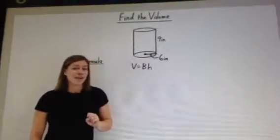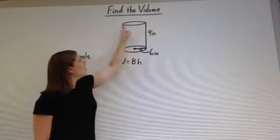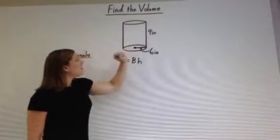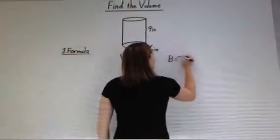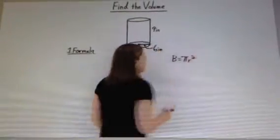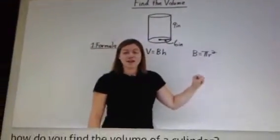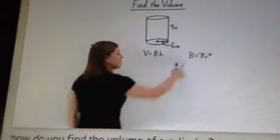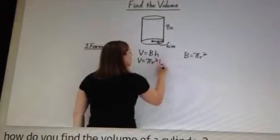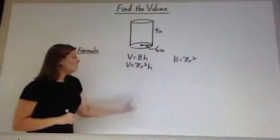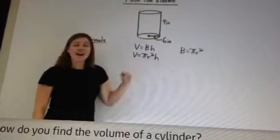Let's take a look at the base. In a cylinder, the base is a circle. We have one base on each end, and each circle has the same area. The area of a circle is πr², so the area of the base is πr². That means we can rewrite the formula: the volume of the cylinder equals πr²h, where r is the radius of the circle and h is the height of the cylinder.